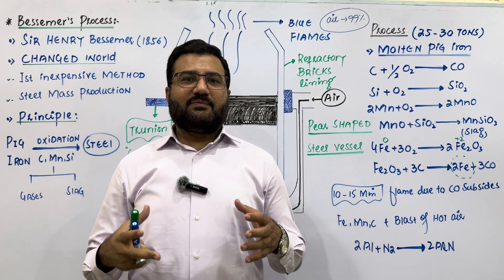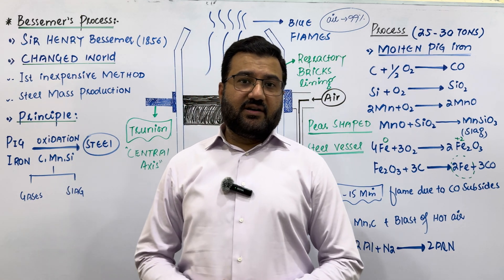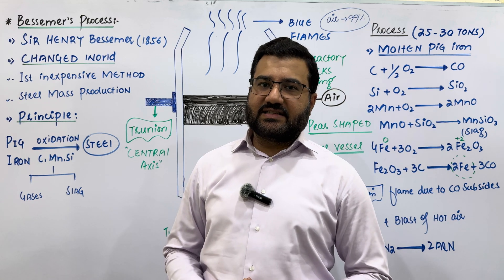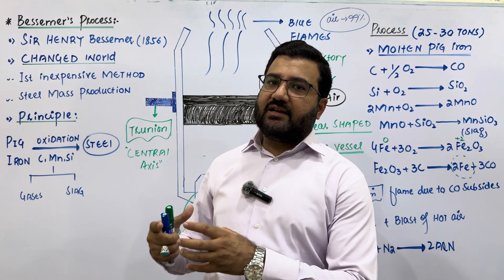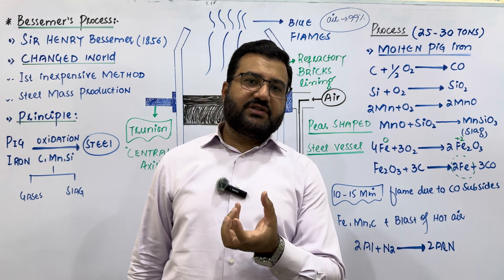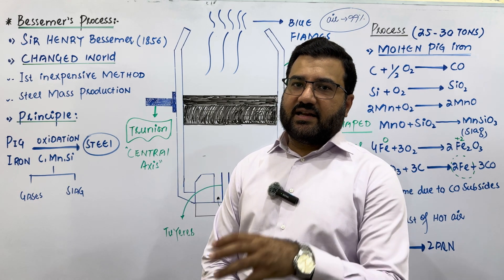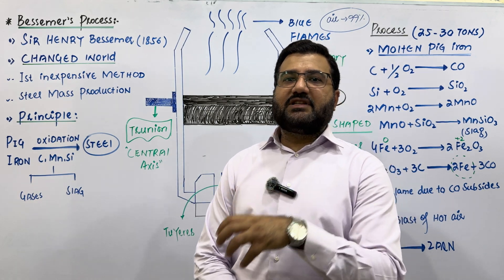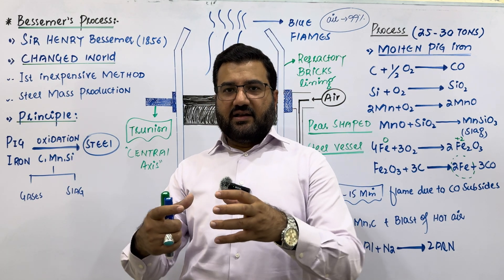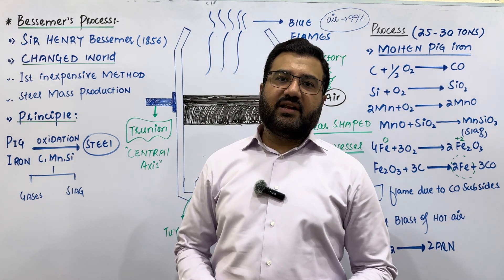Welcome dear students. Let us talk about the process that revolutionized the whole world — that changed the perspective of the world — because this was the first inexpensive method of the mass production of steel. After the manufacture of steel using this process, steel became a very cost-effective alloy for daily life. We are talking about the Bessemer process, named after Sir Henry Bessemer, first used by steel manufacturing industries in 1856, and it was the dominant method of steel production from 1856 to 1865.